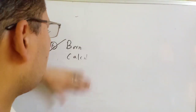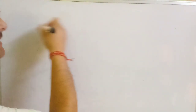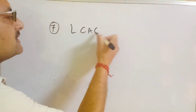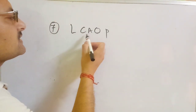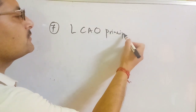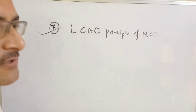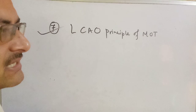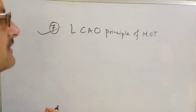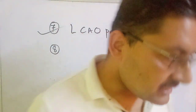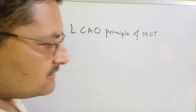Number 7 is covalent bond — the LCAO principle of molecular orbital theory. Linear combination of atomic orbitals — LCAO principle of molecular orbital theory. LCAO principle is the second and last chapter.